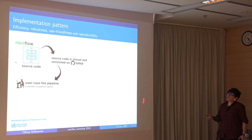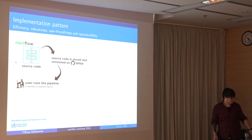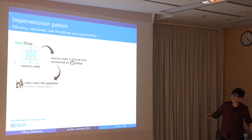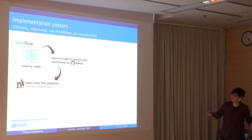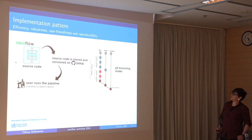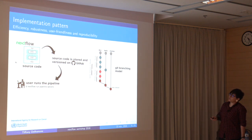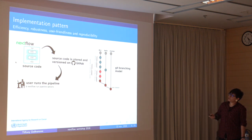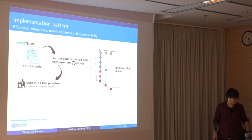In practice, we develop all pipelines in NextFlow, then version and store the source code on GitHub. For the user, it's quite simple — they just need one line: NextFlow run, the name of the pipeline, and some options described in the readme. We have also developed a particular Git branching model. For each pipeline, there are three branches: the dev branch where all commits are made; the beta branch, where dev is merged each time an issue is fixed; and the master branch, where all commits are merged when a new version is released.